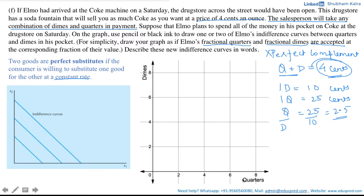We have this graph where on the x-axis we have quarters and on the y-axis we have dimes. Now, with all the information that goods are perfect substitutes, the constant rate is 2.5, we have quarters and dimes on the axis. Now, how will you actually draw your indifference curves?